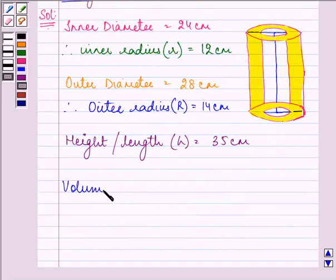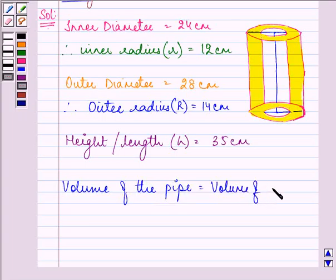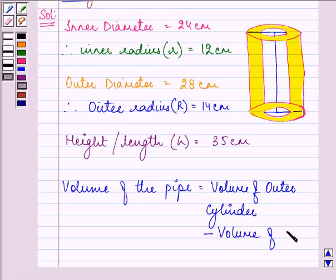we will be finding out the volume of the pipe in cm cube. It will be volume of outer cylinder minus volume of inner cylinder.